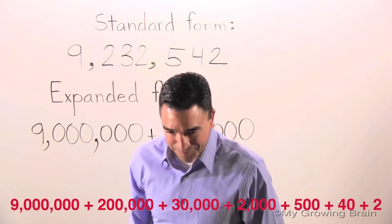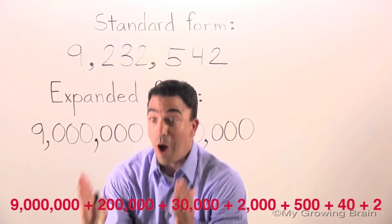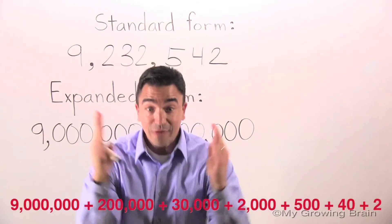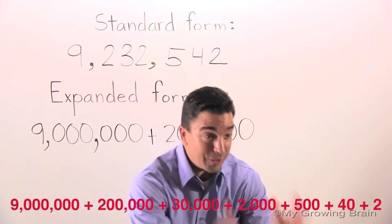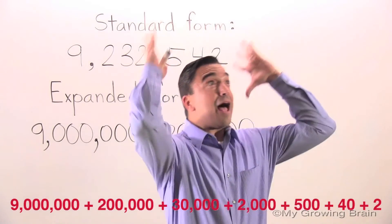What do you know? I see it. 9 million, plus 200,000, plus 30,000, plus 2,000, plus 500, plus 40, plus 2.